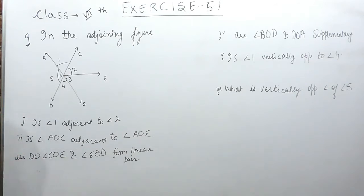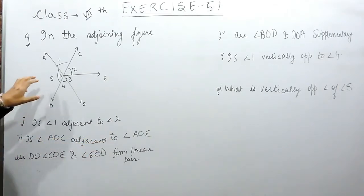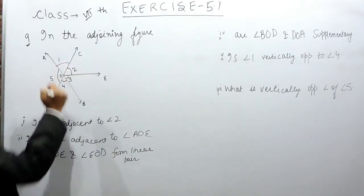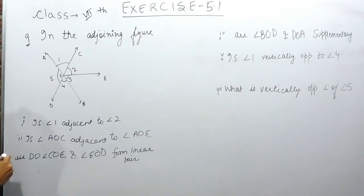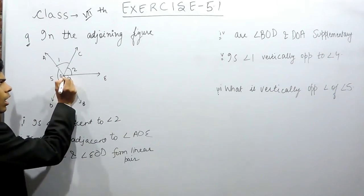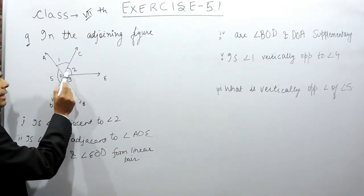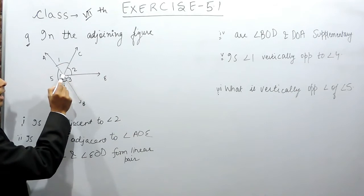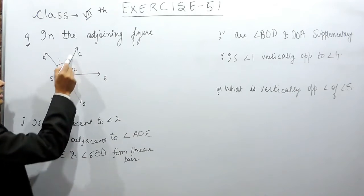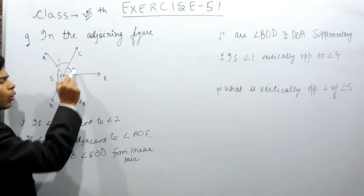The first part says, is angle 1 adjacent to angle 2? Adjacent angles are those angles which lie on each other's side. But there is one more thing to know: adjacent angles are those angles which have one common vertex, one common side, and they should not overlap each other. Now in this case you can see that angle 1 and angle 2 have this common side, this is C, common vertex O and they are not overlapping. So that's why they are adjacent angles.